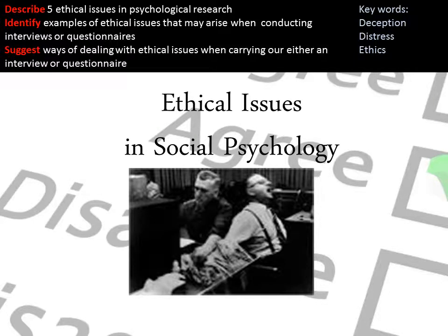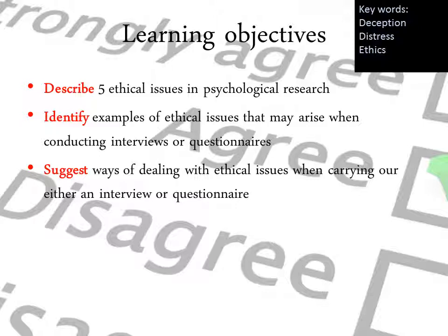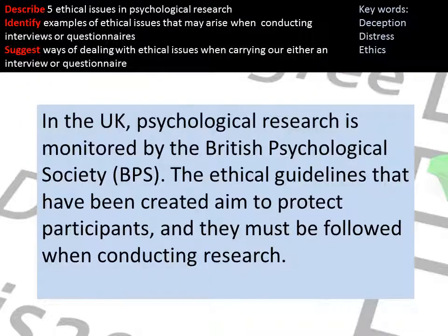Ethical issues within social psychology — you should know at least five ethical issues within psychological research, be able to identify examples of how they arise within interviews and questionnaires, and suggest ways of dealing with them. In the UK, psychological research is monitored by the British Psychological Society (BPS), who produce ethical guidelines that protect participants and must be followed when conducting research.